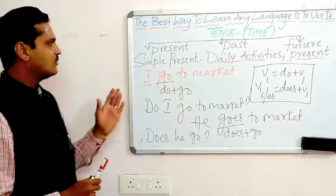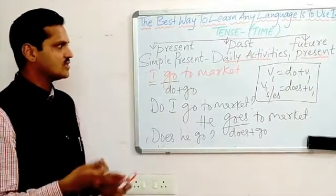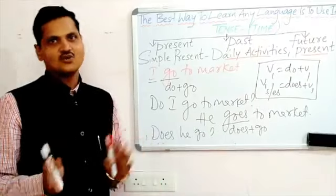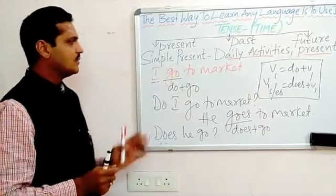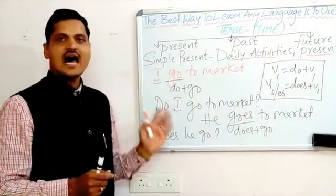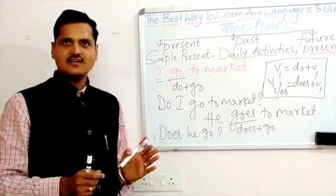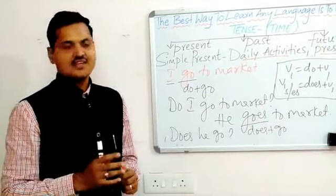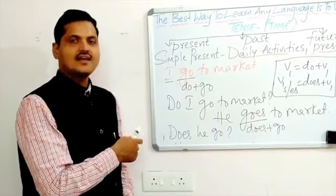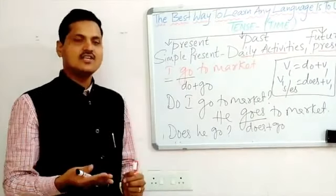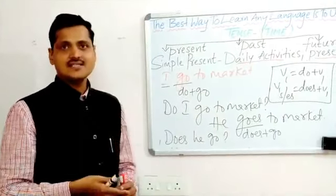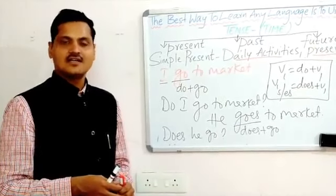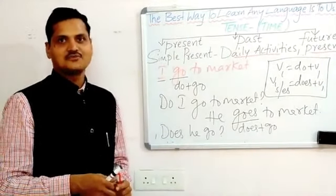So this is how simple present is used — for daily activities, present or universal facts, or unique things. Always remember: the structure is I/we/you/they plus V1 form; he/she/it plus V1 s or es form. You can practice this, and in my next video I will go for the next tense, that is present continuous. Keep practicing and you will see a difference. Thank you.